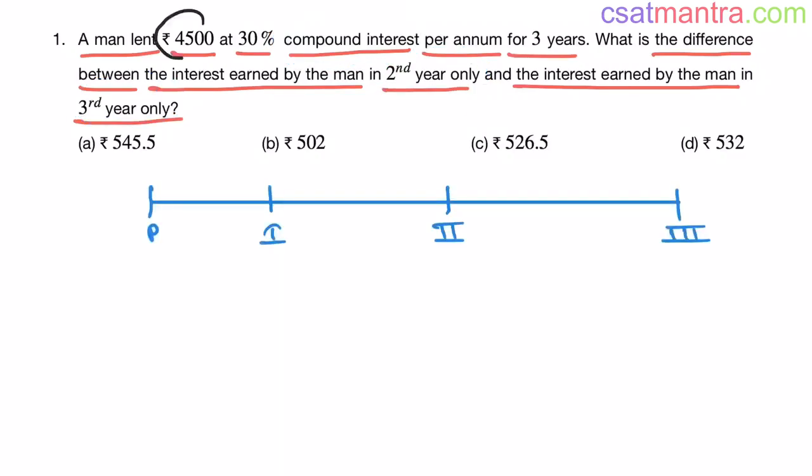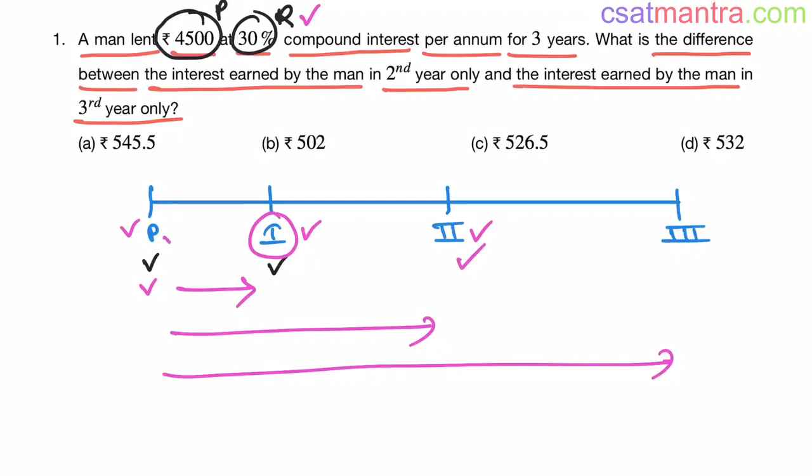Now, we have principal amount P. This is rate of interest. Now, this P becomes I (Roman 1) after 1 year. I is the amount after 1 year. At this rate, P became I after 1 year. II is the amount after 2 years. After 2 years, P became II. After 3 years, this principal became III, my friends. Kindly note, these are not interest, my friends. These are the amounts P became after 1st, 2nd and 3rd year.